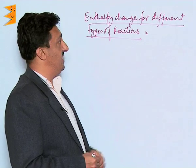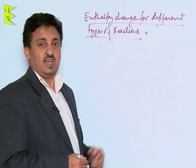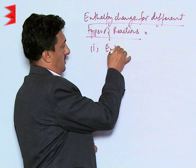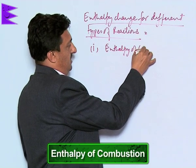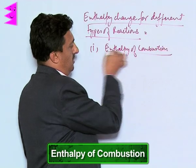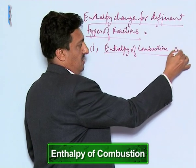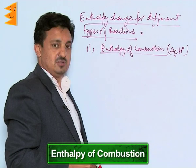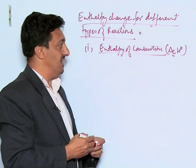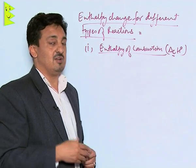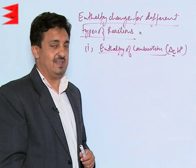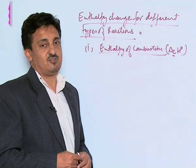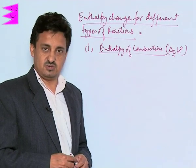Now, let us see enthalpy changes for different types of reactions. The first in the list is enthalpy of combustion, written as ΔcH⁰. Combustions are always exothermic, so it is the amount of energy released when one mole of a substance is completely combusted in air. The heat released during this process is called the enthalpy of combustion.